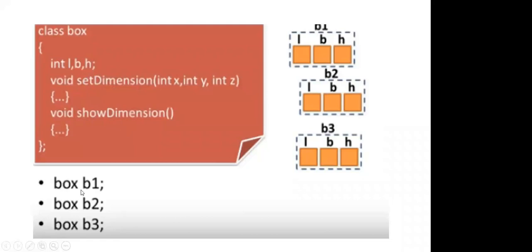After creating the class Box, we indirectly create a data type called 'box,' which is a user-defined or customer data type. We can use this data type multiple times for multiple instances. For example, 'Box B1' — here Box is the data type and B1 is the name of the instance. B1 references the class Box, which has three variables L, B, H. Similarly, B2 and B3 are different instances of the same class.